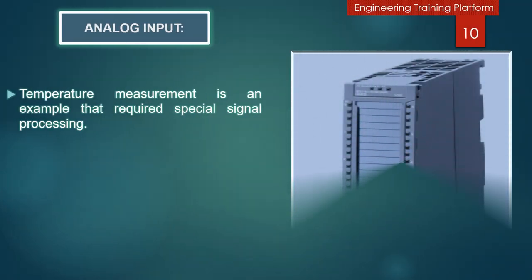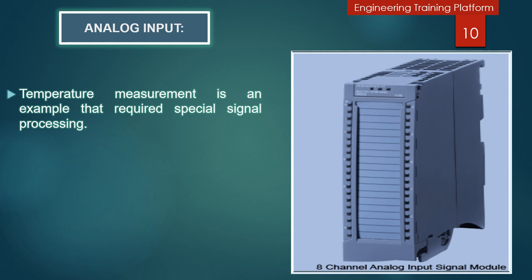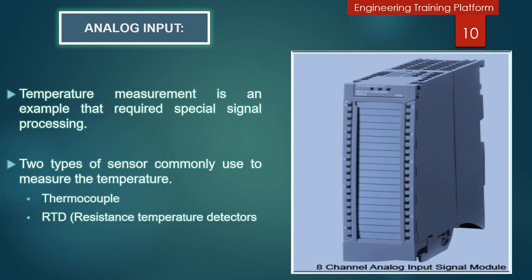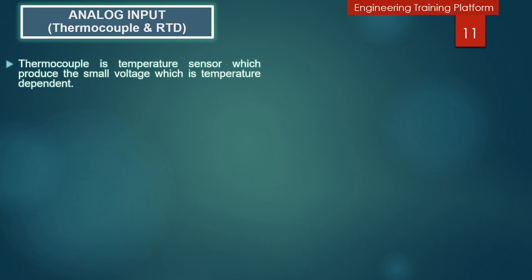Temperature measurement is an example of an application that requires special signal processing. Two types of sensors are commonly used to measure temperature: thermocouples and RTDs. RTD stands for resistance temperature detector. You can see in the picture the S7-1500 PLC with an 8-channel analog input signal module that can be used with a variety of analog signals, including RTD and thermocouple signals. We will discuss thermocouples and RTDs in detail, including the selection criteria and the differences between both, when choosing analog input modules.